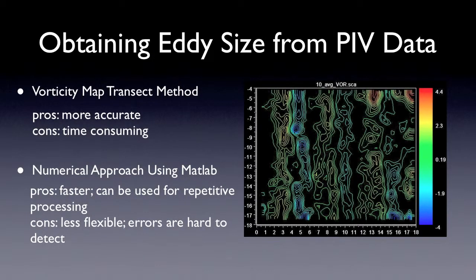In my project, I used two ways to find eddy size of water flow. These are vorticity map transect method and numerical approach using MATLAB. Here is how the first method works. First, we cut the vorticity map horizontally.